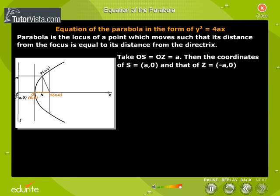Take OS equal to OZ equal to a. Then the coordinates of S are (a, 0) and that of Z is (-a, 0).